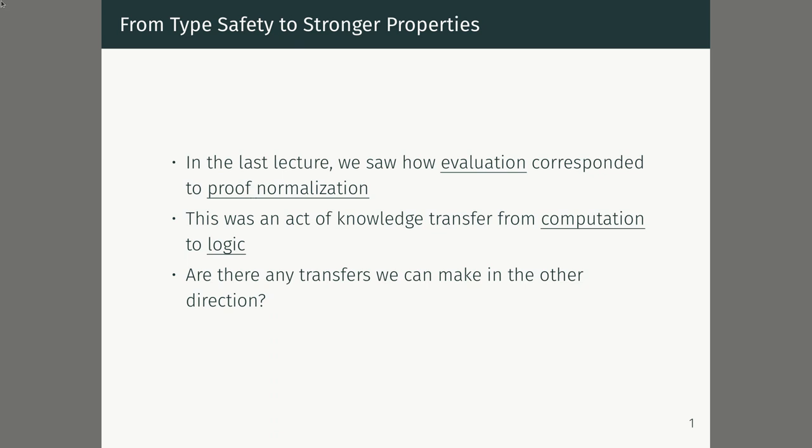In the last lecture we saw how evaluation in the simply typed lambda calculus corresponded to proof normalization in propositional logic. We had an act of knowledge transfer from computation to logic. We noticed the Curry-Howard correspondence between propositional logic and the simply typed lambda calculus — a strong collection of analogies between types and propositions, between terms and proofs, and each term of the simply typed lambda calculus corresponds to some rule of logic about how to deduce. So any property of the simply typed lambda calculus actually tells us something about logic.